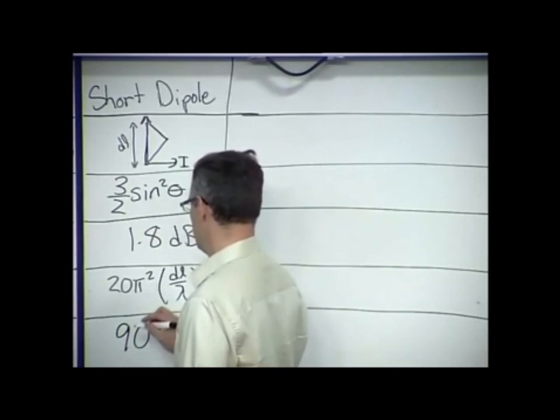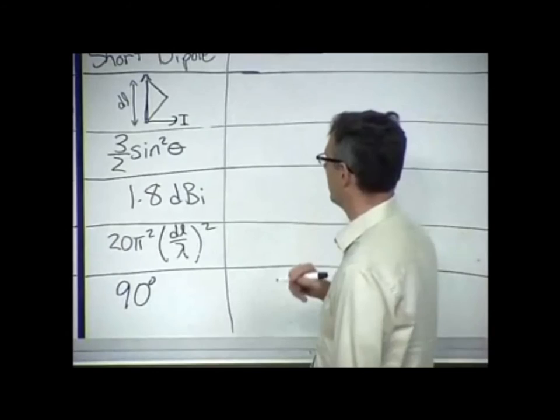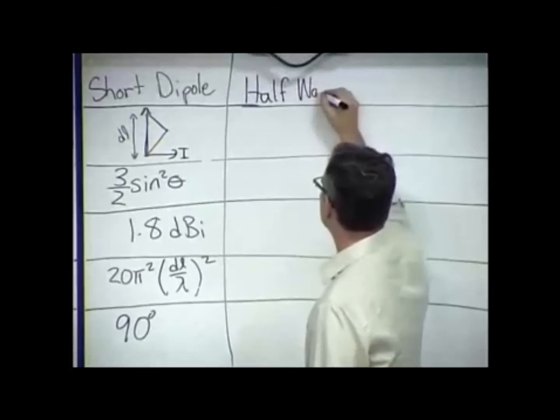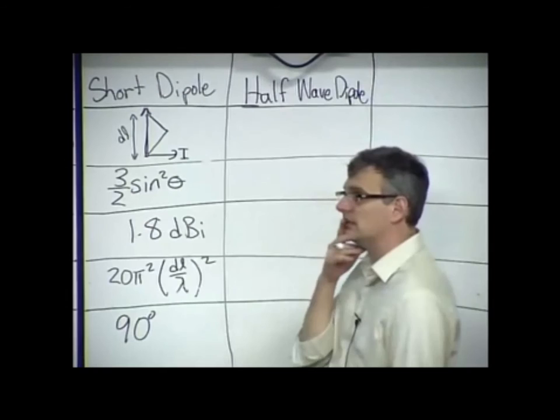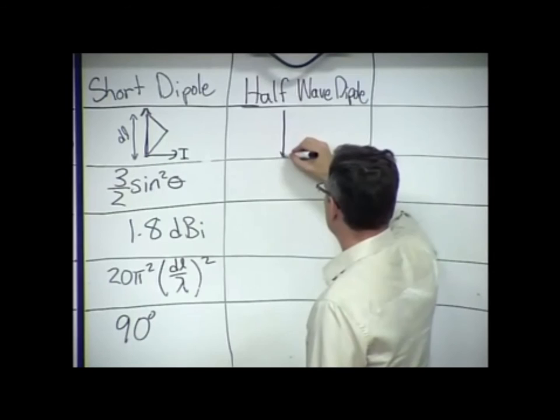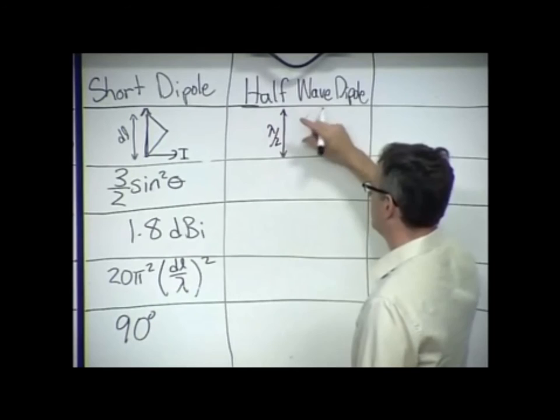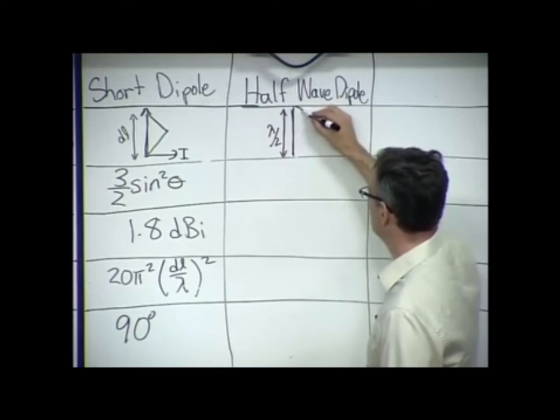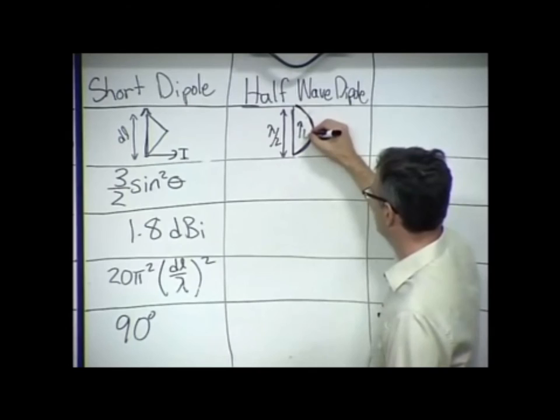Now, the next antenna that we need to talk about is the half-wave dipole. In this case, the current distribution, the half-wave dipole is exactly the way its name implies. It is a lambda over 2 length of wire. And this time, the current distribution that we use is one hump of a sine wave. And it's all in phase.